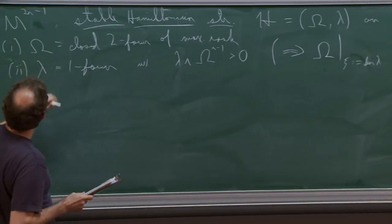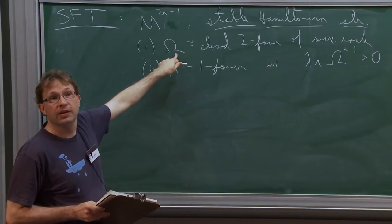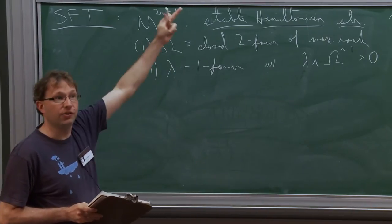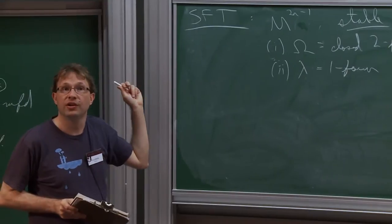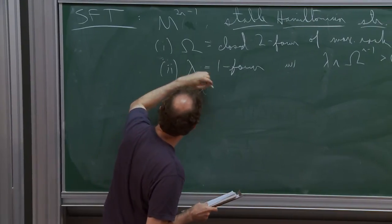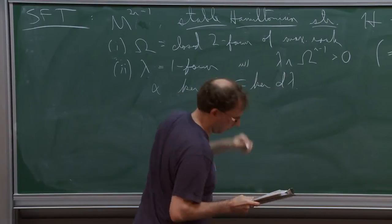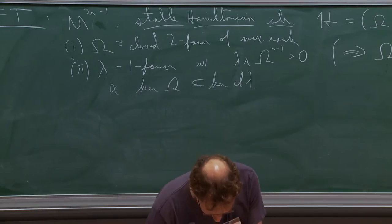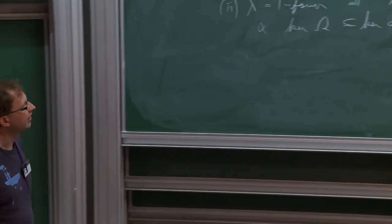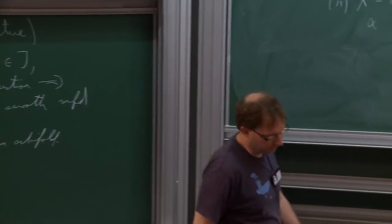And then the other condition: since omega has maximal rank on an odd dimensional manifold, it has a kernel that's always one-dimensional — that's the so-called characteristic line field, the one dimension of directions in which omega is degenerate. So what I'm going to require is that d lambda also vanishes on that same kernel. Another way of saying it is that the kernel of omega is contained in the kernel of d lambda. Okay, so this is a definition which has been around for several years. As stated, it's not too hard to understand, but I think a lot of people don't really understand what it means, so let me talk a little bit about that.